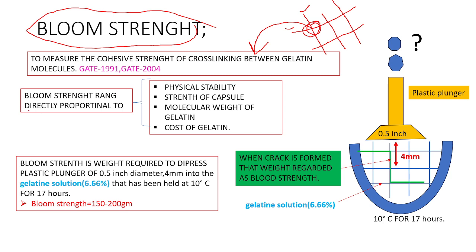The normal ideal bloom strength range is 150 to 200 grams. If bloom strength increases, the physical stability of the gelatin molecules will increase. Bloom strength increasing also increases the strength of the capsule and increases the molecular weight of the gelatin. Additionally, if bloom strength increases, the cost of the gelatin also increases.